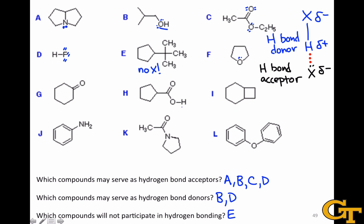Molecule F has an oxygen atom with two lone pairs, and so can serve as a hydrogen bond acceptor. But again, a lot like molecule A, the oxygen is not bonded to any hydrogens, and so this can't serve as a hydrogen bond donor. Molecule G includes a carbonyl oxygen, again with two lone pairs, and so this can act as a hydrogen bond acceptor. It can engage in a hydrogen bond with X-H on something else, but it doesn't include any oxygen-hydrogen bonds itself, and so it cannot serve as a hydrogen bond donor.